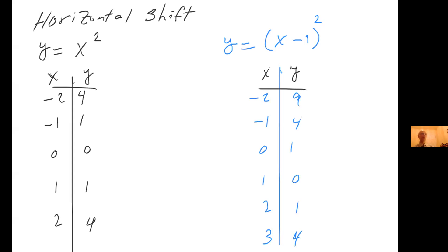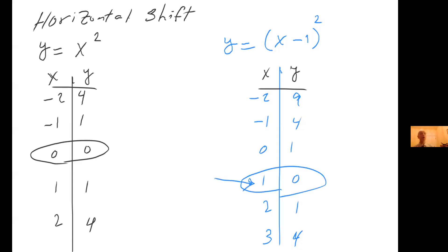Here's what I propose. The easiest approach is to look at the vertex of the first function, y = x². When your input is 0, your output is 0. But for the blue one, if you want the same output of 0, notice you must have an input of positive 1, which is one unit to the right. In other words, you need to compensate for that shift — by one unit.